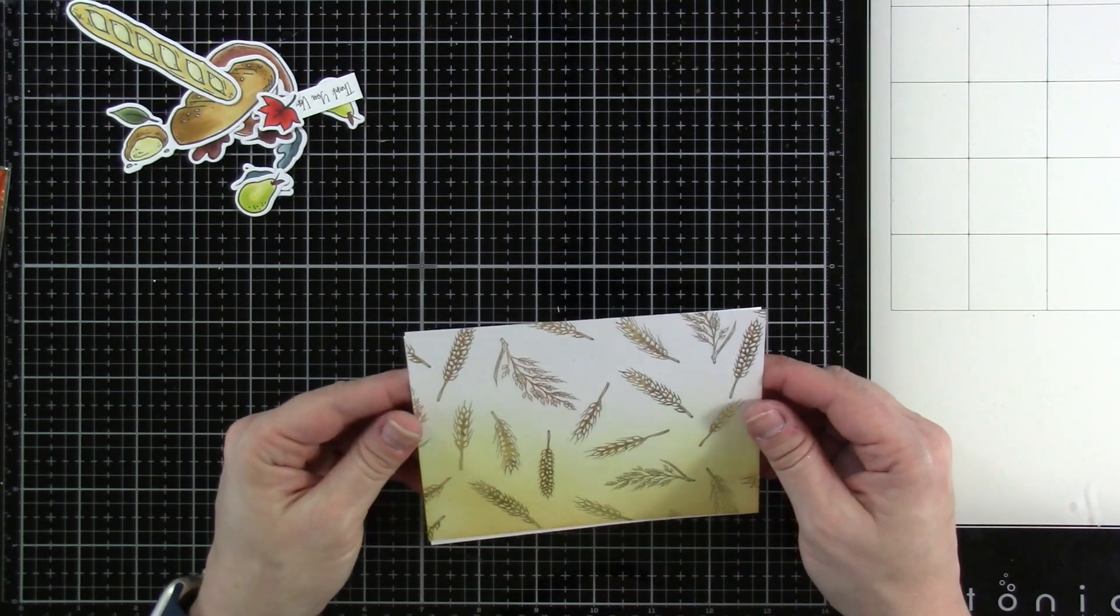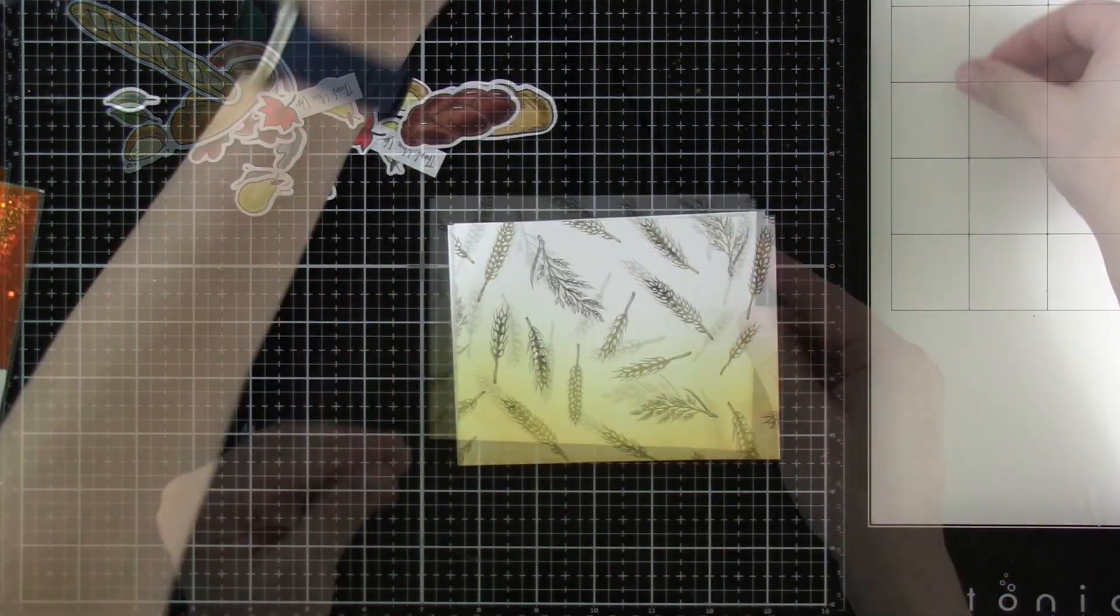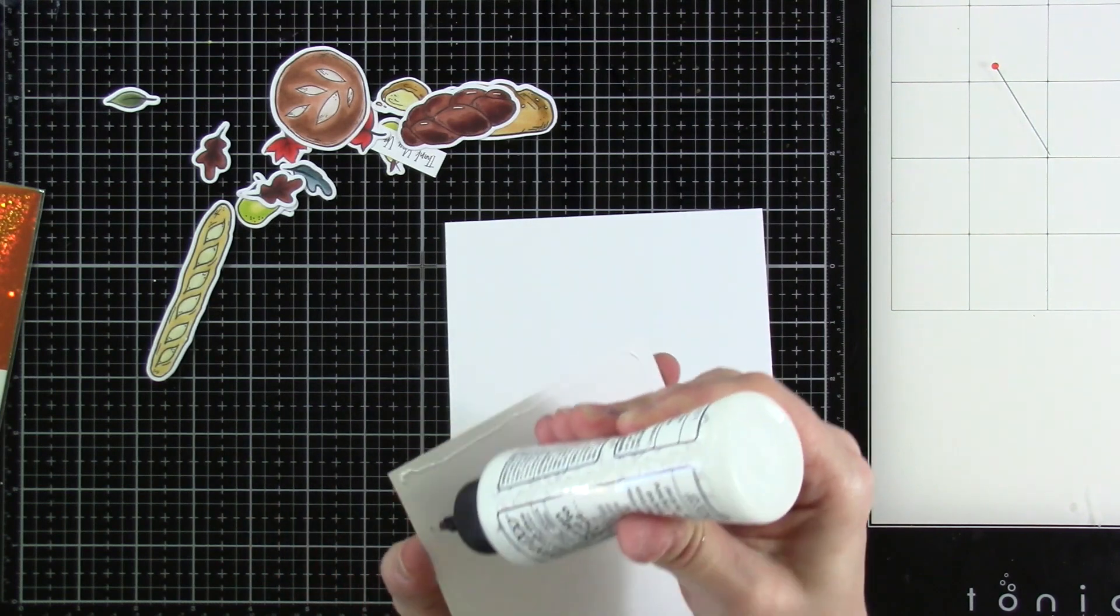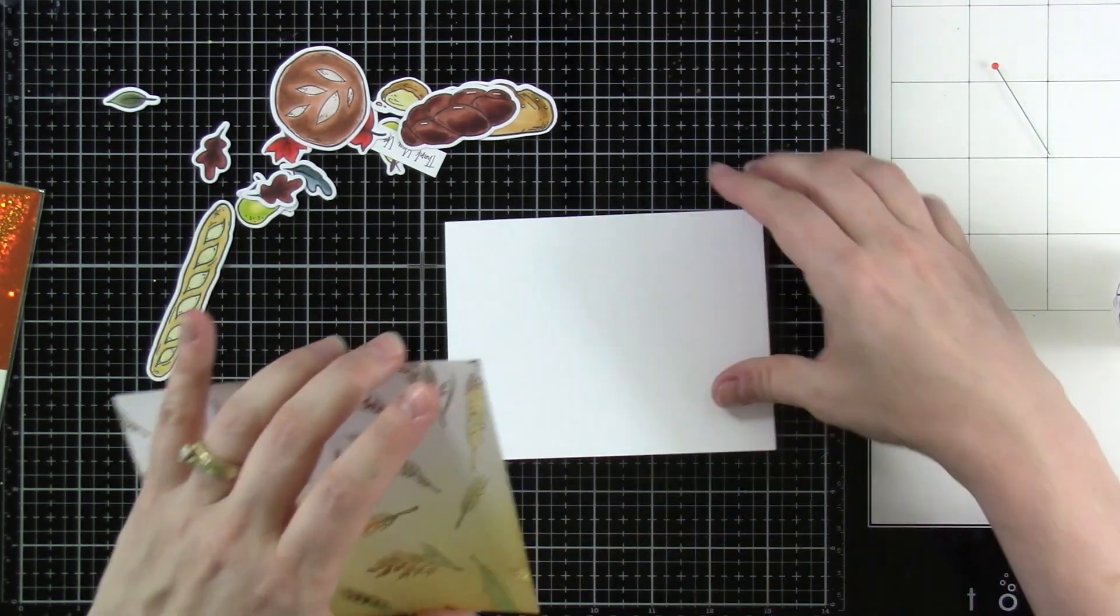I'll get my card base ready and check out, can you see that shininess? I love it. We're going to tack down our panel to our card base using some liquid glue.